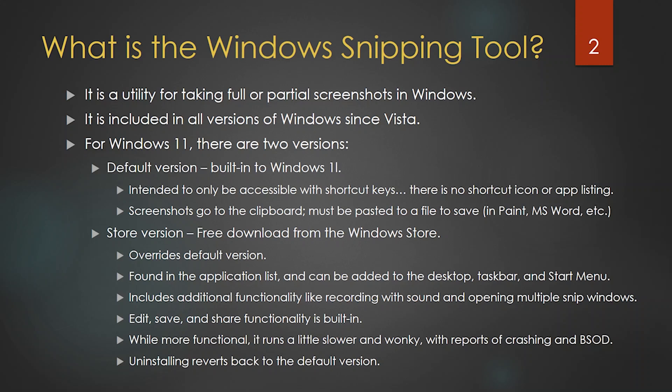While more functional, the store version tends to run a little bit more slowly and it's a little wonky. There are reports of people getting pulled out of full screen applications, having the snipping tool crash, and even people running into the blue screen of death. If you wanted to revert back to the default version, all you need to do is uninstall it and the shortcut keys will go back to the original interface.